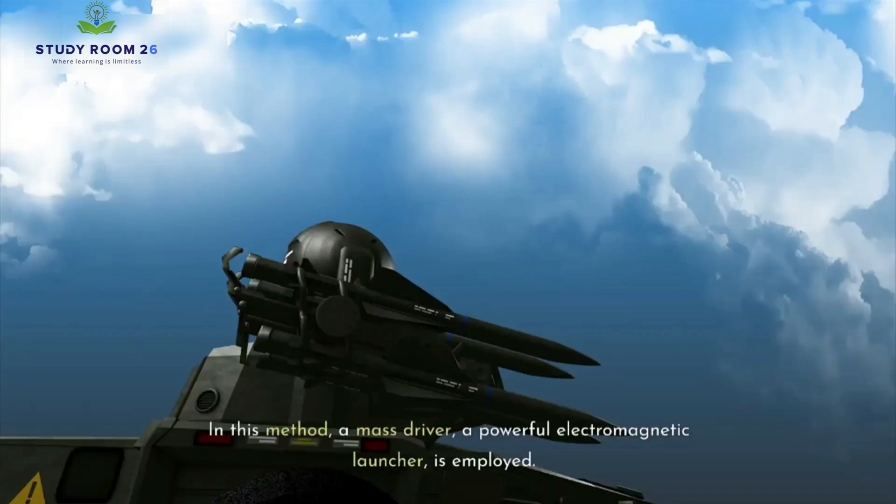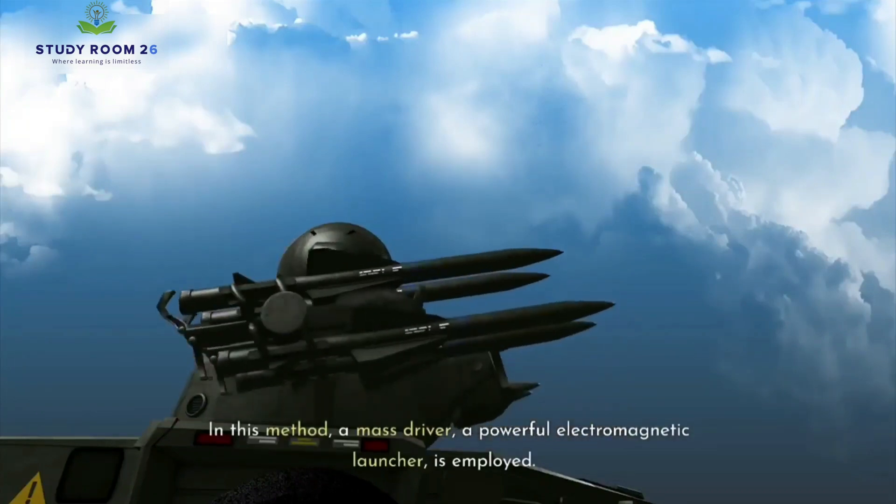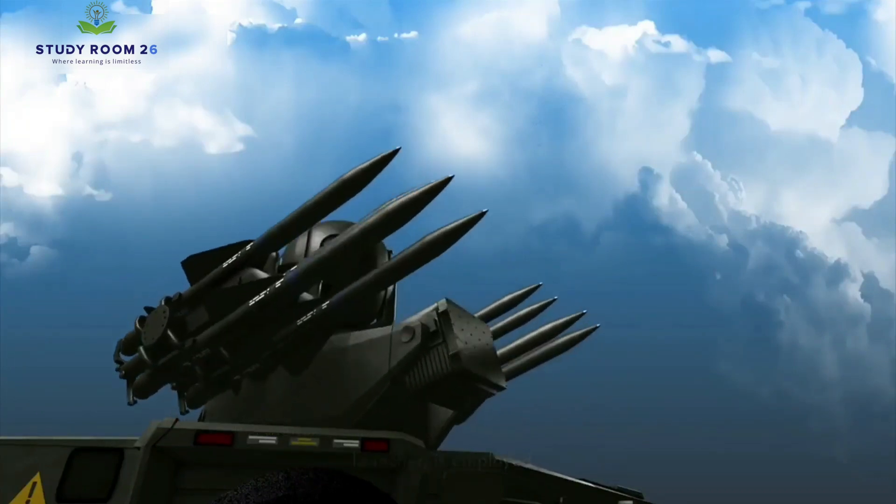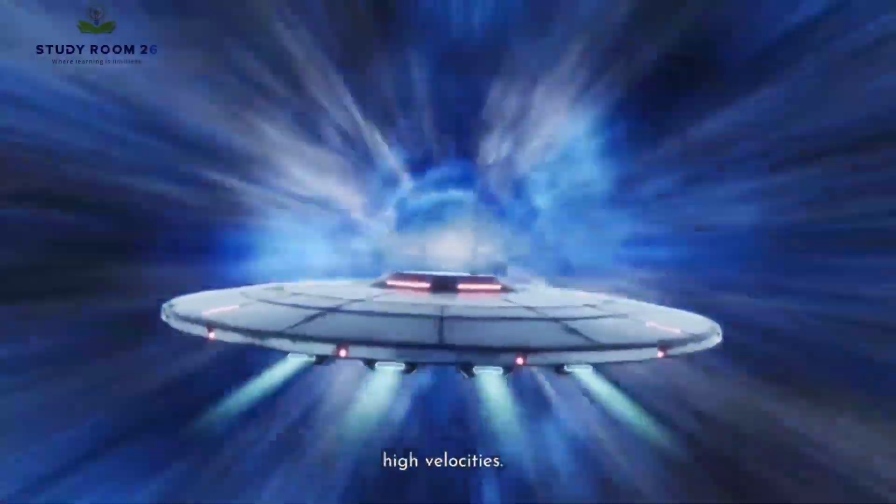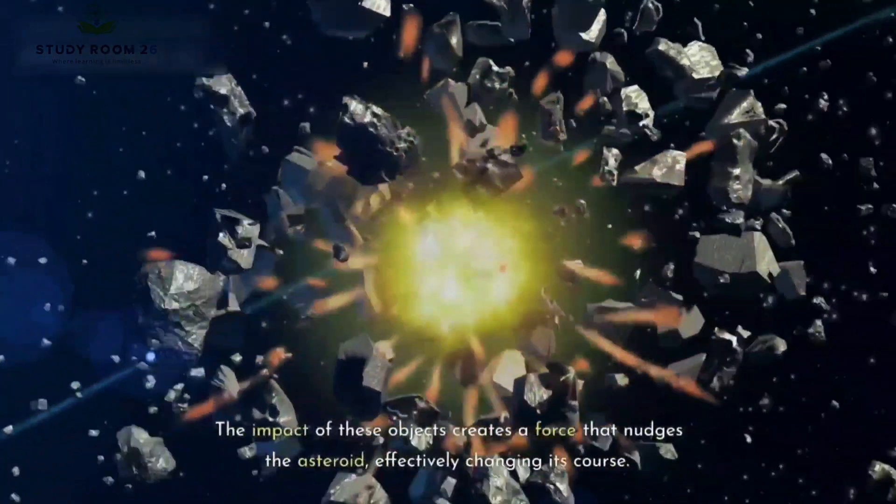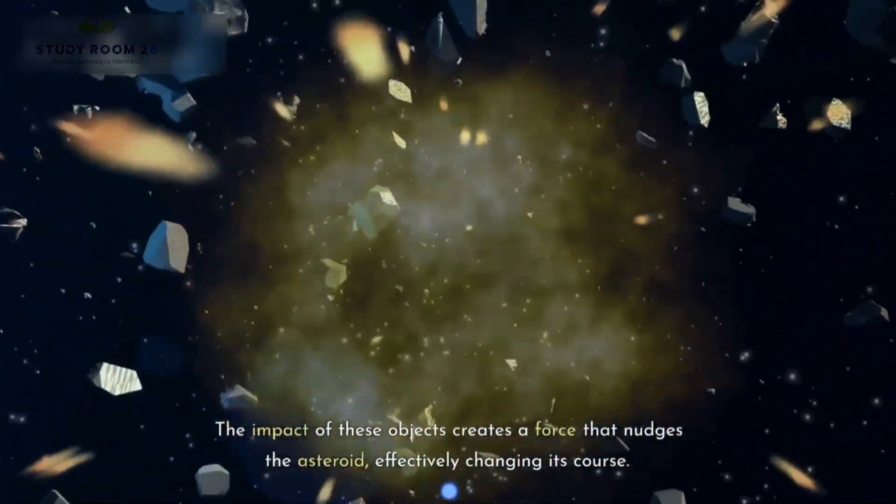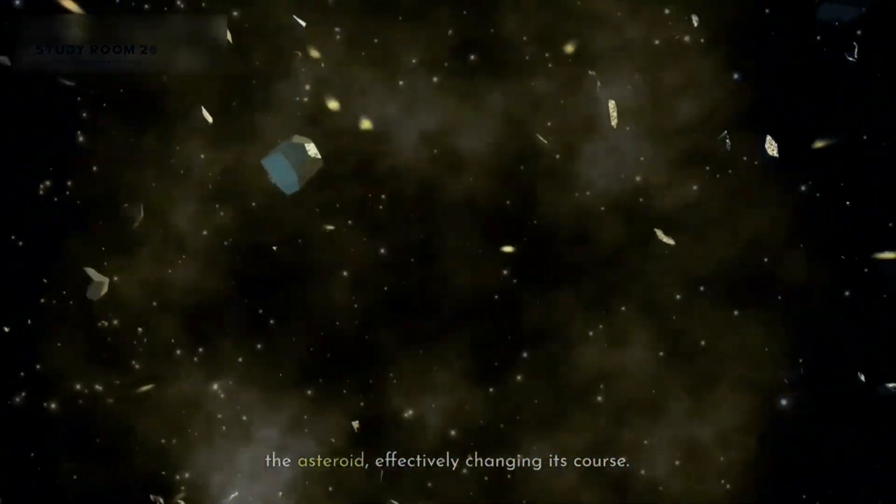In this method, a mass driver, a powerful electromagnetic launcher, is employed. It hurls projectiles or spacecraft towards the asteroid at high velocities. The impact of these objects creates a force that nudges the asteroid, effectively changing its course.